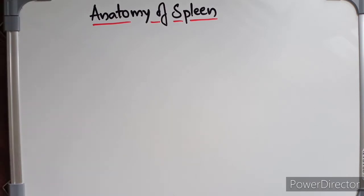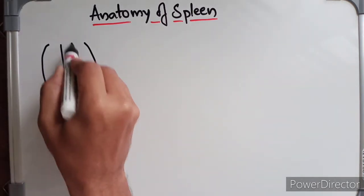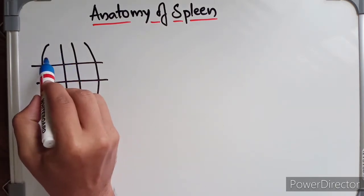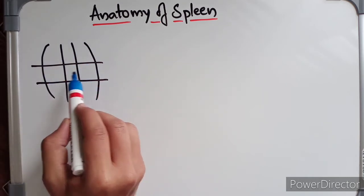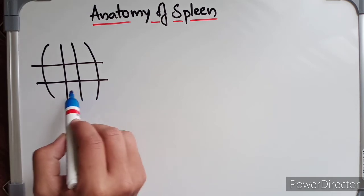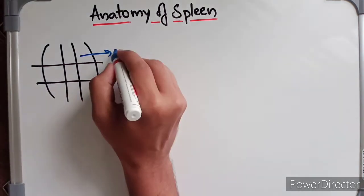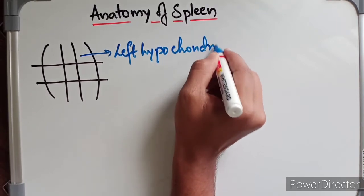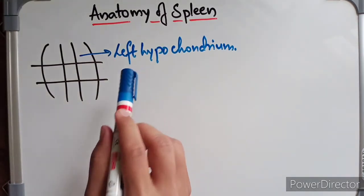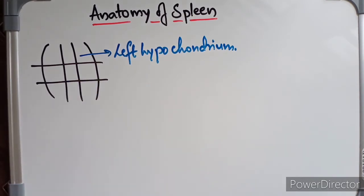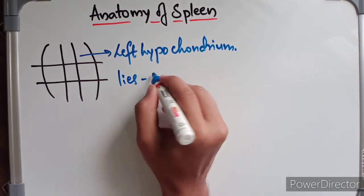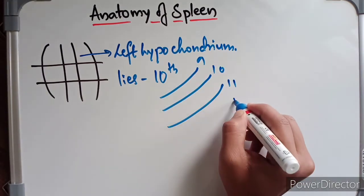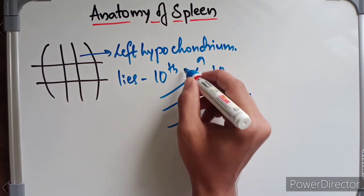Coming to the location of the spleen — the abdomen is divided into nine regions: epigastrium, right and left hypochondrium, right and left lumbar region, umbilical region, right and left iliac fossa, and hypogastrium. The spleen is located in the left hypochondrium, between the fundus of the stomach and the diaphragm, lying along the long axis of the 10th rib.